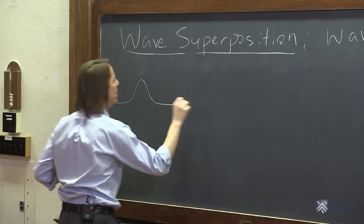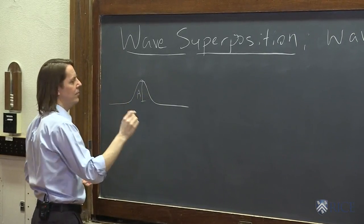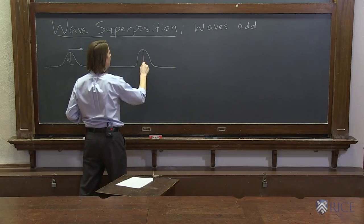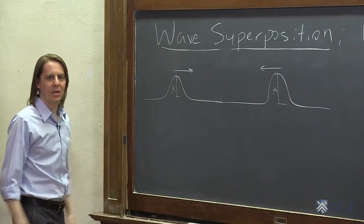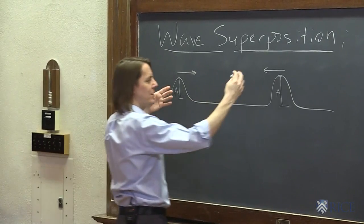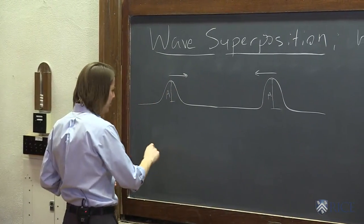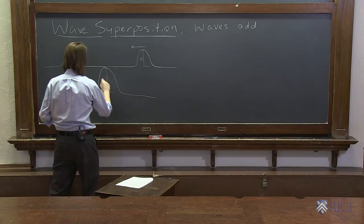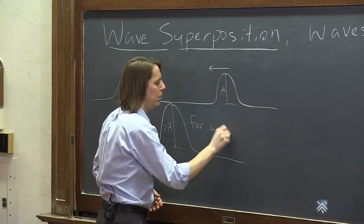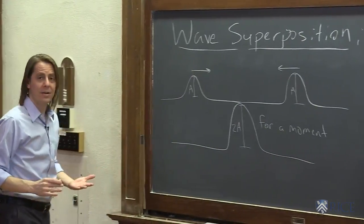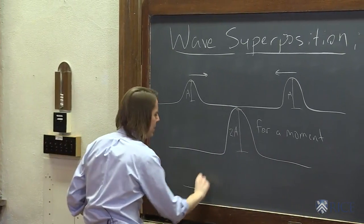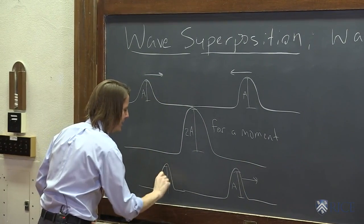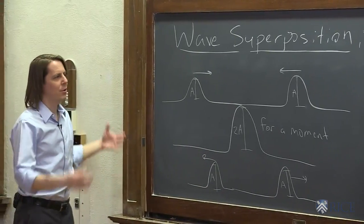To get started, we'll draw pulses. Here's a pulse of height A moving one way on a string, and on the same string another pulse of height A moving toward it — they're coming together. Mathematically, you just add the two functions. There would be a moment where they're on top of each other and the combined height would be 2A, just for a moment. Then, as time progresses, each pulse returns to height A and the pulses move right through each other.